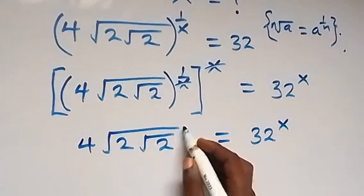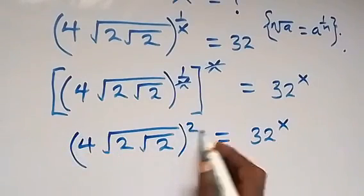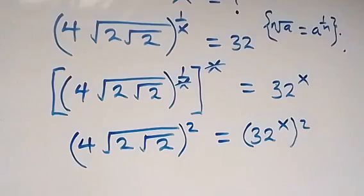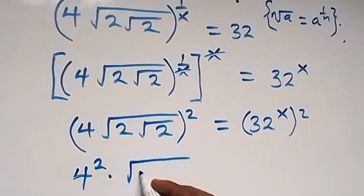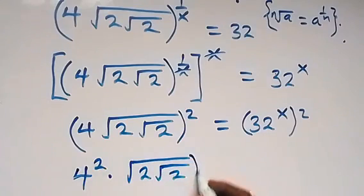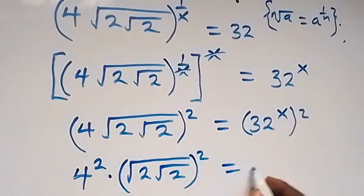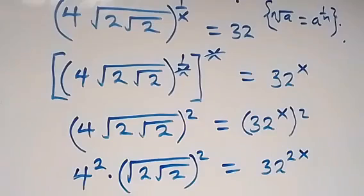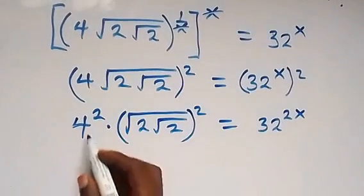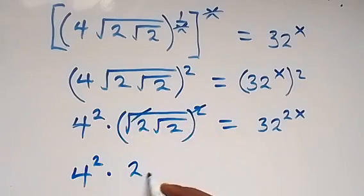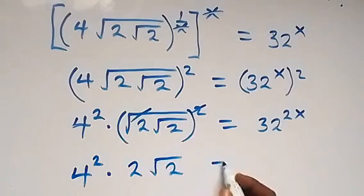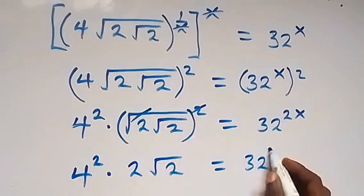From here, let's square both sides — square this side and also square this side. This square will affect 4 and also the square root, so we have 4 squared, then times square root of 2, then times square root of 2, then root 2 also squared, equals 32 raised to power 2x. We leave this as 4 squared, then the square cancels the square root and we have 2, so: 4 squared times 2 times root 2 equals 32 raised to power 2x.